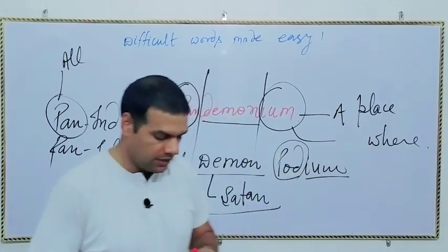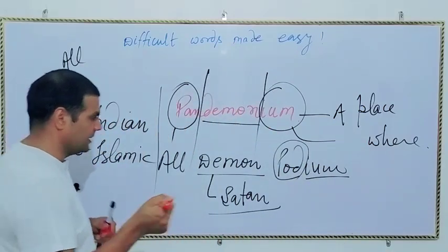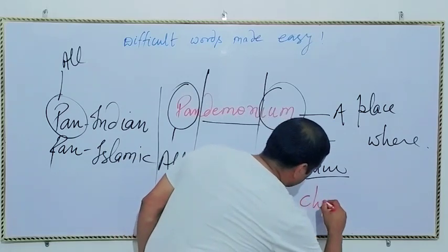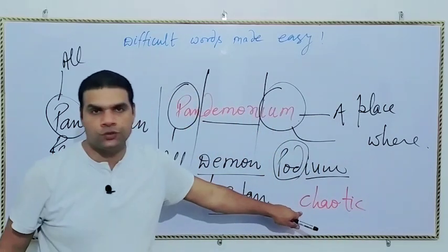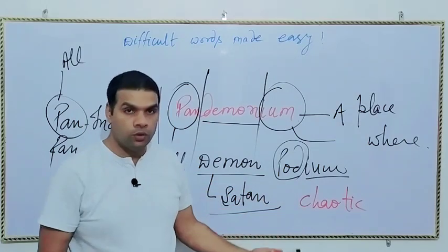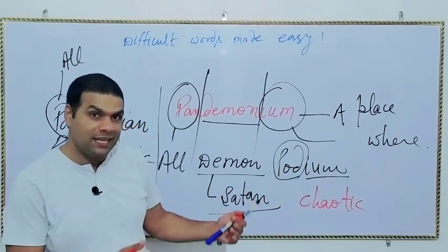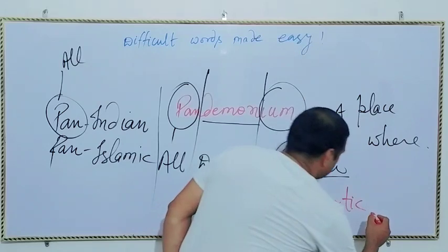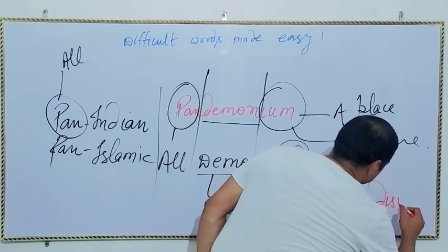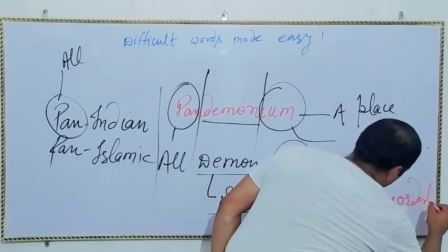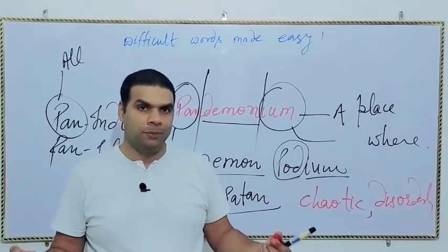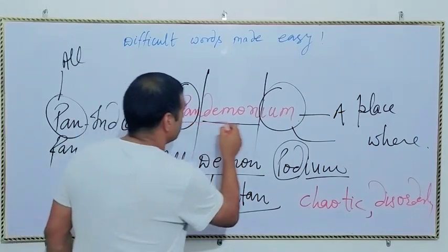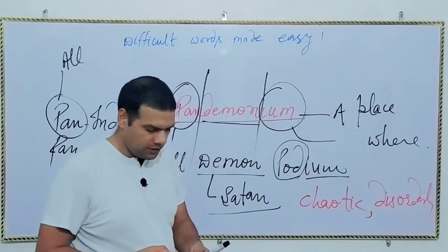So that place will be very much chaotic - the word is chaos or chaotic - and it will be disorderly and this will be very violent and noisy place. And that is precisely what the word pandemonium means.